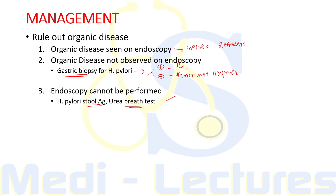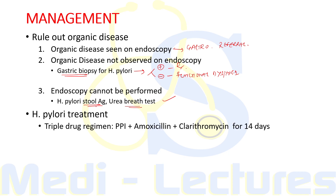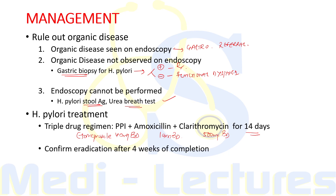If H. pylori is positive, a commonly used regimen is a triple drug regimen: a proton pump inhibitor like esomeprazole 40 mg BD, plus amoxicillin 1 gram BD, and clarithromycin 500 mg BD — given for a total of 14 days. After treatment is completed, we will confirm eradication of H. pylori after four weeks, either by urea breath test or stool antigen test. Endoscopy with gastric biopsy for eradication confirmation is rarely performed.